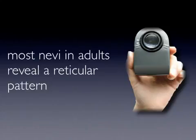As discussed in part 1 of this podcast, globular nevi are the prevalent nevus pattern in children and they are thought to be persisting lesions through most of the lifetime, acquiring eventually the otherwise stereotypical appearance of a dermal nevus in the elderly.